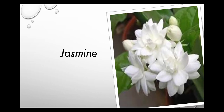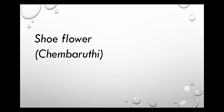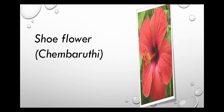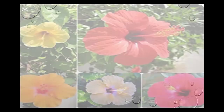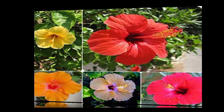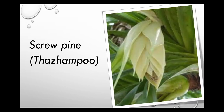Jasmine: Well known for its lovely smell. Shoe Flower (Chembarathi): It has many medicinal properties. Screw Pine (Thazhampoo): It is used to make perfumes and oils. This plant is commonly seen on the riverside.